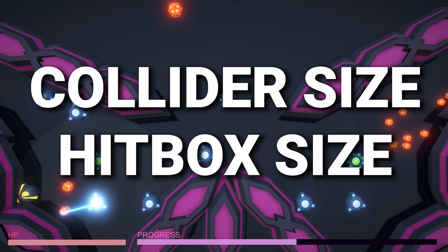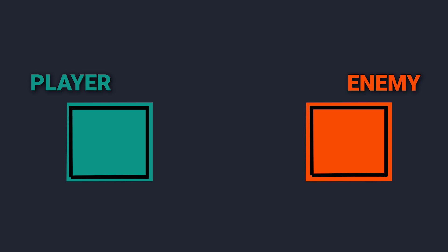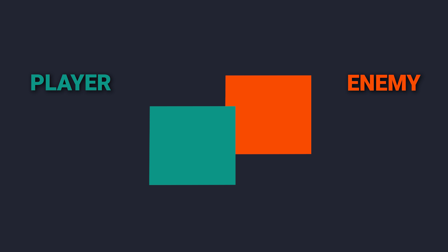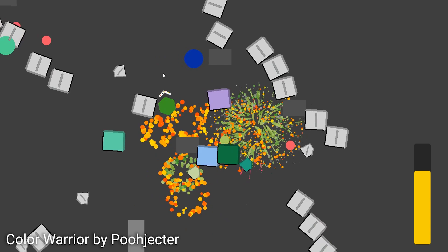I would always recommend shaping hitboxes to the advantage of the player — usually that means making them a bit smaller than the visuals, to make sure that whenever you collide with an enemy it is very obvious that you did. Just barely touching something and still losing feels pretty bad. Every variable in your game matters, so make sure you choose the correct numbers. Balancing can absolutely make or break your game.